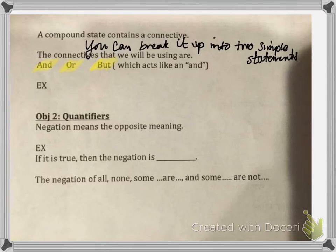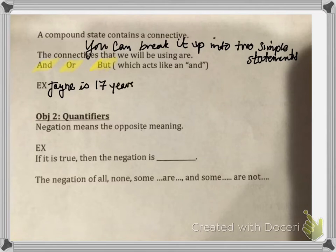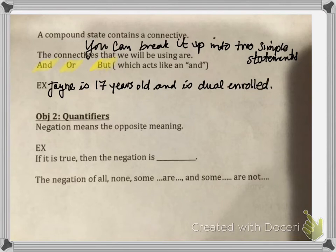Here's an example: 'Jane is 17 years old and is dual enrolled.' This is a compound statement because I can write it as 'Jane is 17 years old' — that's a simple statement — and 'Jane is dual enrolled' — that's a simple statement. So when we use a compound statement, we have that connective connecting two simple statements together.